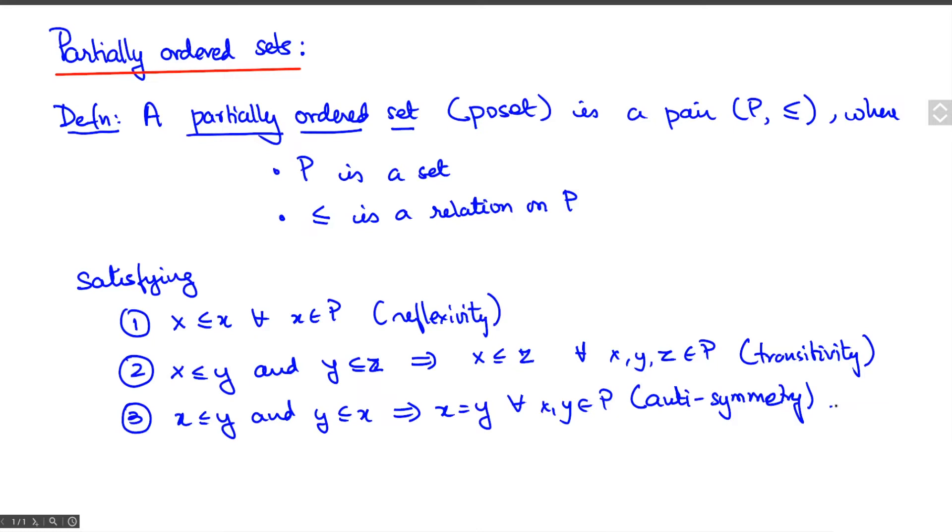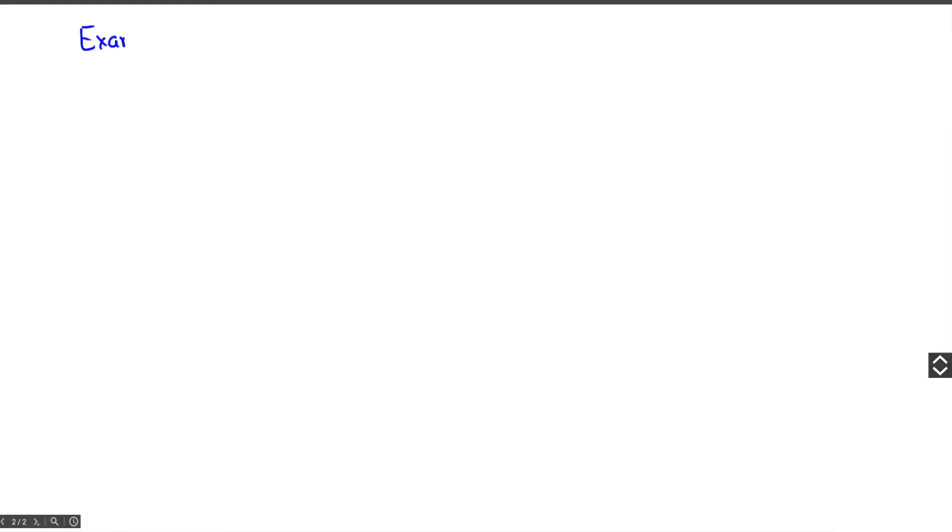Let's look at some examples. You already know a lot of examples. You could take Z, the set of all integers, with the usual ordering of integers. This is a partially ordered set. You could take N, all non-negative integers, or P, all positive integers.